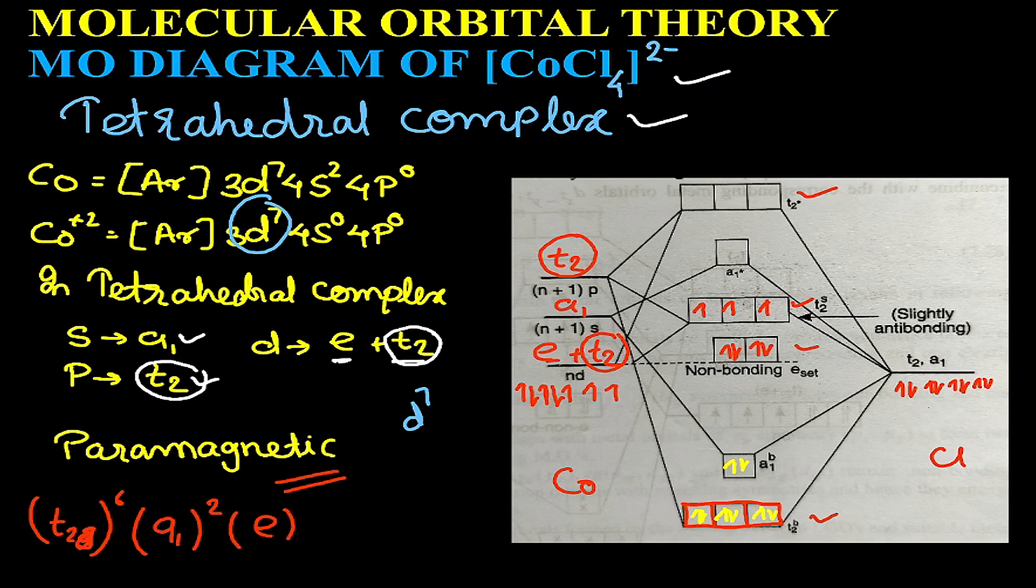with four electrons, and T2 that is slightly anti-bonding with three electrons. This is the electronic configuration. The complex is colored and paramagnetic in nature. This is our MO diagram for CoCl4 2-.